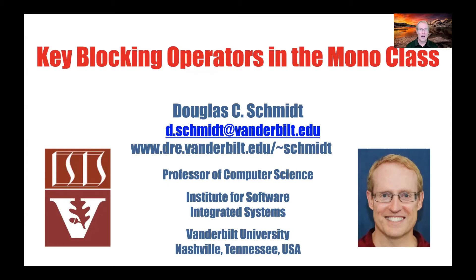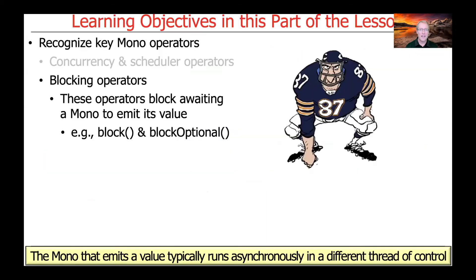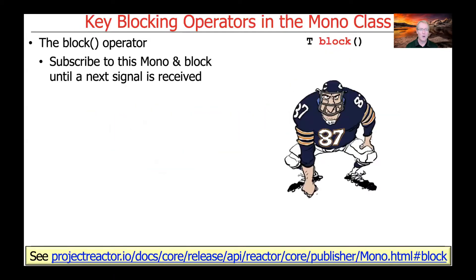We're now going to talk about key blocking operators in Project Reactor's Mono class. These operators can be used to have a calling thread block, awaiting for a mono to emit its value. Typically, this mono will be running asynchronously in a different thread of control than the calling thread. The two operators we're going to take a look at are block and blockOptional, and there are several variants of each we're going to explore.